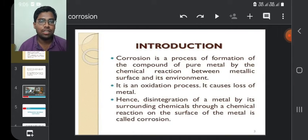Introduction of corrosion. Corrosion is a process of formation of the compound of pure metal by the chemical reaction between metallic surface and its environment. It is an oxidation process. It causes loss of metal. Hence, disintegration of a metal by its surrounding chemicals through a chemical reaction on the surface of the metal is called corrosion.